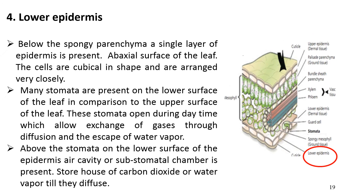Below the spongy parenchyma, a single layer of epidermis is present. This layer is present on the abaxial (lower) surface of the leaf. The cells are cubical in shape and arranged very closely without any intercellular space. Many stomata are present on the lower surface of the leaf compared to the upper surface. These stomata open during daytime, allowing exchange of gases through diffusion and the escape of water vapor.